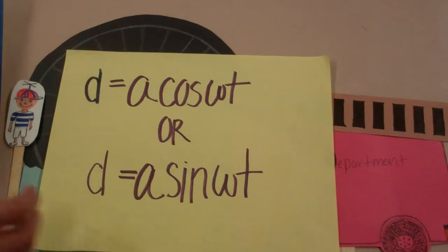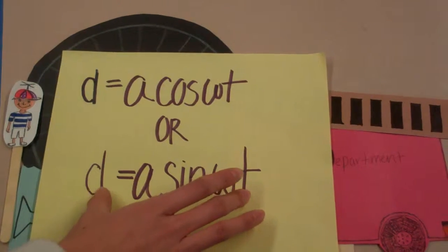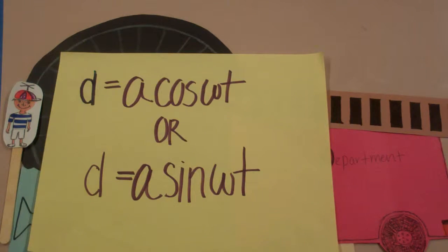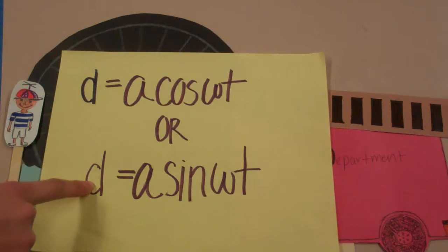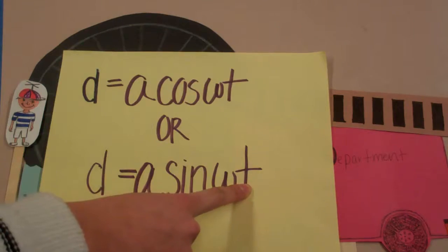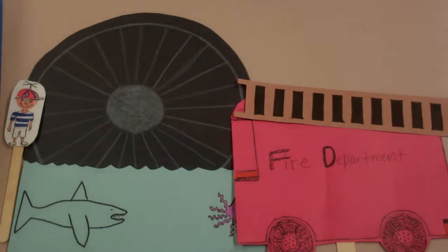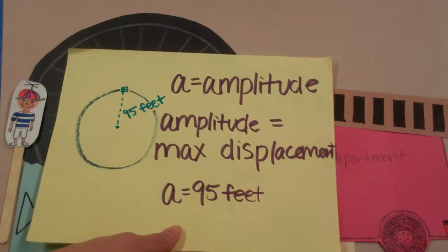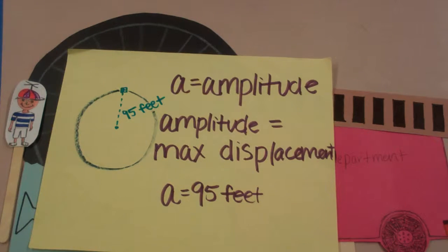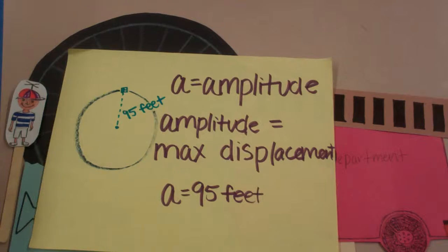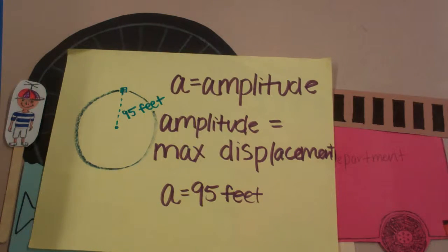T and D are synonymous with the x and y values respectively, with D representing the distance from the origin and T representing the time that had passed. They were able to find the amplitude because the furthest Timmy could have ever traveled from the origin was the same distance as the radius of the Ferris Wheel — the maximum displacement from the origin — thus the amplitude was the radius of the Ferris Wheel, or 95 feet.